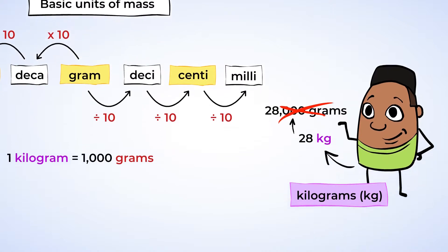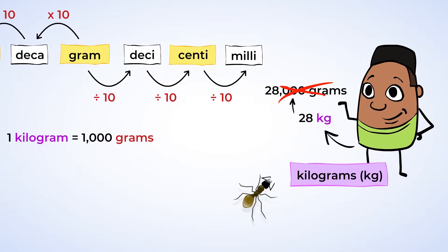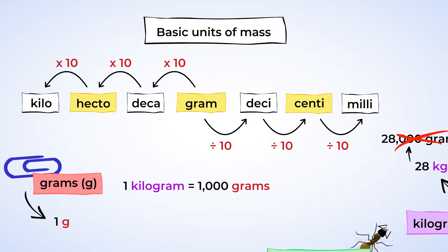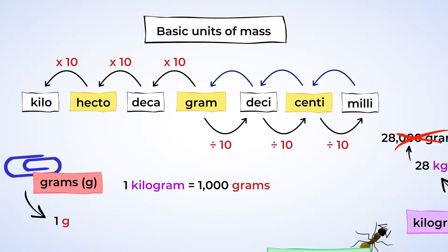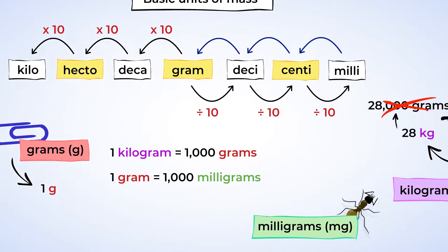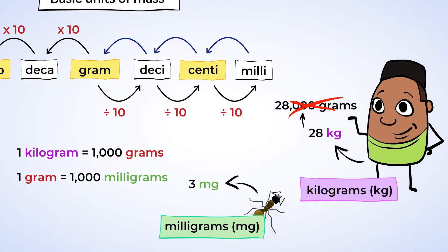If you wanted to measure the mass of a small insect, though, you'd use milligrams. Looking at the chart again, milli is three spaces over from the base unit. So that's 1,000 times smaller. There are 1,000 milligrams in a gram. So milligrams are really pretty tiny. The average ant weighs about 3 milligrams.